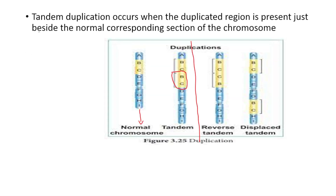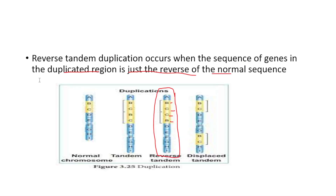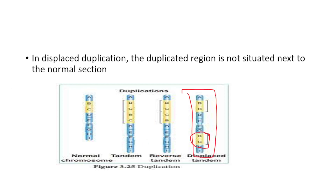In summary: tandem duplication occurs when the duplicated region is present just beside the normal corresponding section — BC is repeated as BC. Reverse tandem duplication has the duplicated sequence in reverse order — BC becomes CB. Displaced duplication means the duplicated region is not situated next to the normal position.